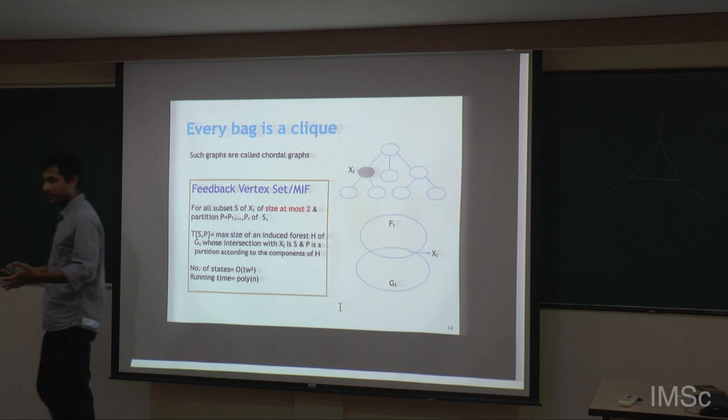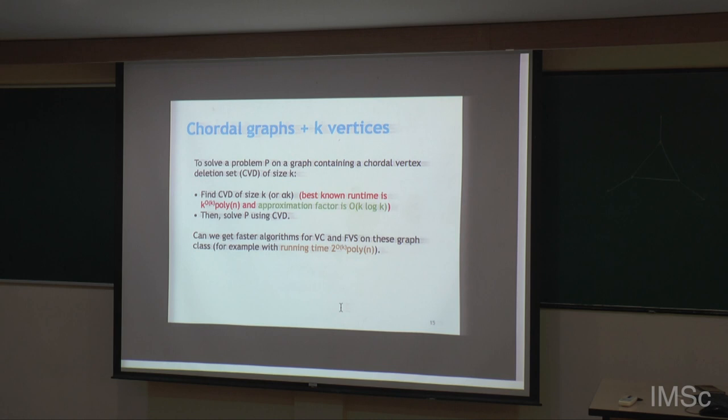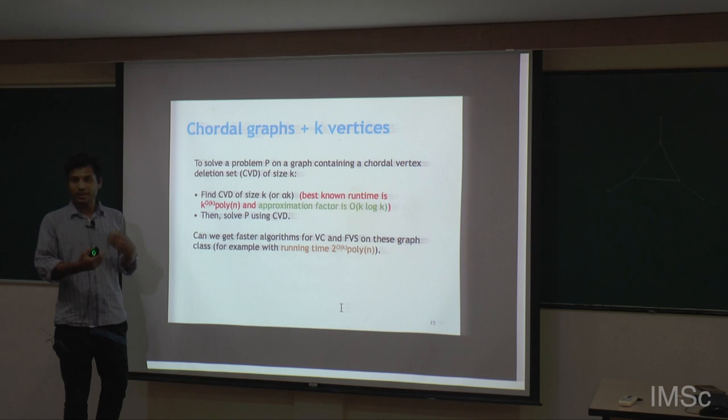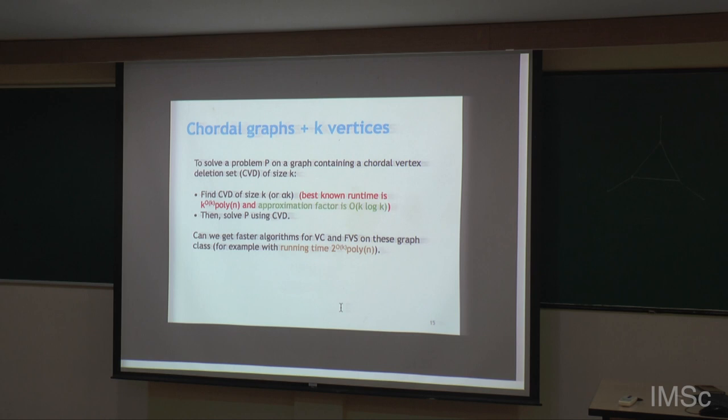Now suppose I am given a graph which is close to chordal — a chordal graph plus k vertices, where k is somewhat small. I want to solve feedback vertex set and vertex cover. One way is to compute a chordal vertex deletion set, which gives a chordal graph with a clique tree decomposition plus k extra vertices. Using this information, we can try to give an algorithm.